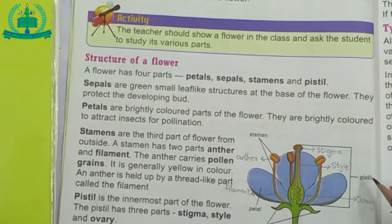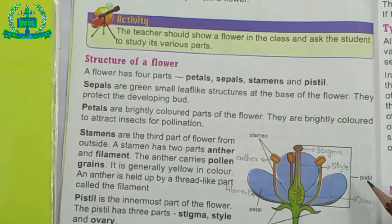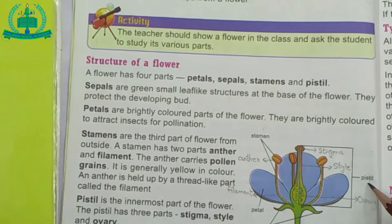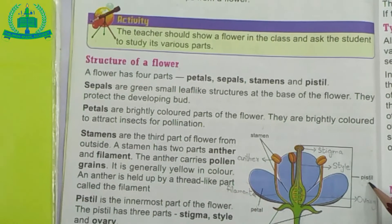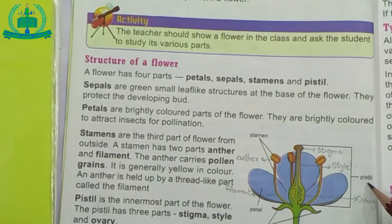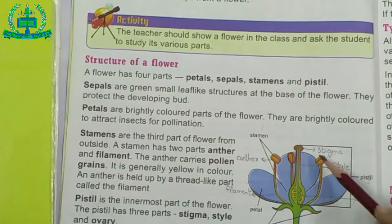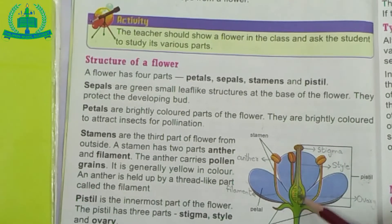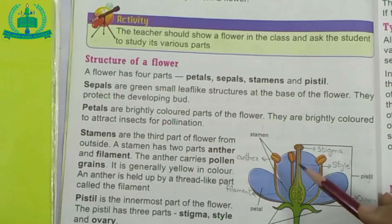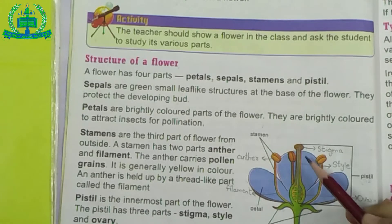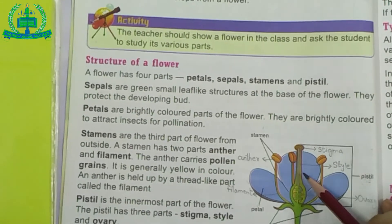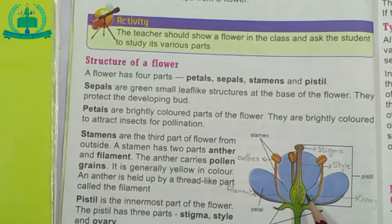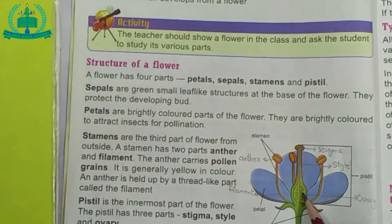The last part is Pistil. This is the female reproductive part of the flower. Pistil consists of three parts: number one, stigma; number two, style; number three, ovary.